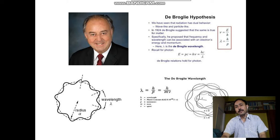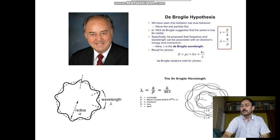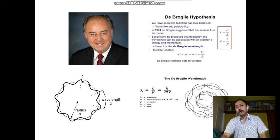In 1924, de Broglie, a French theoretical physicist, suggested that material particles behave like waves on some occasions. This was experimentally verified by Davisson and Germer in 1927, by electron diffraction from a nickel crystal.